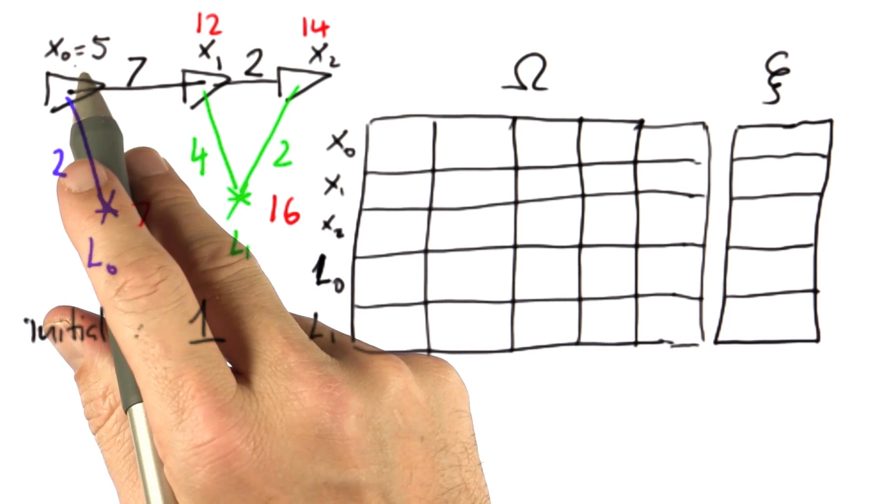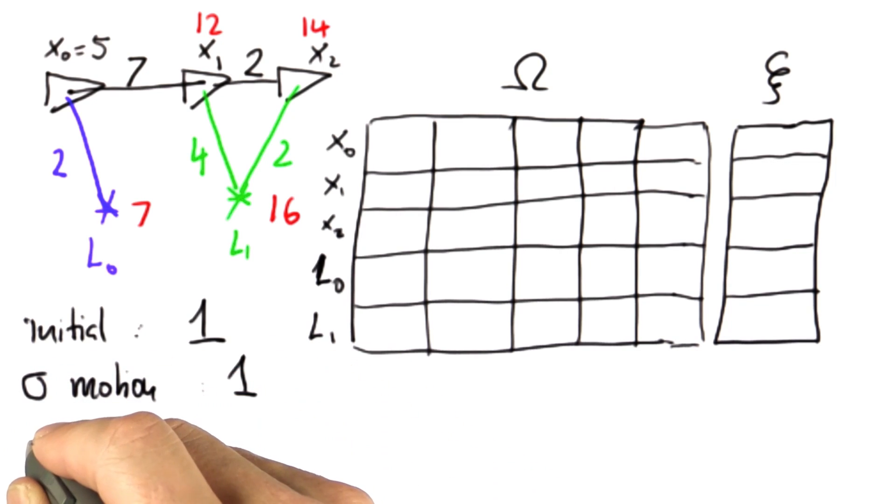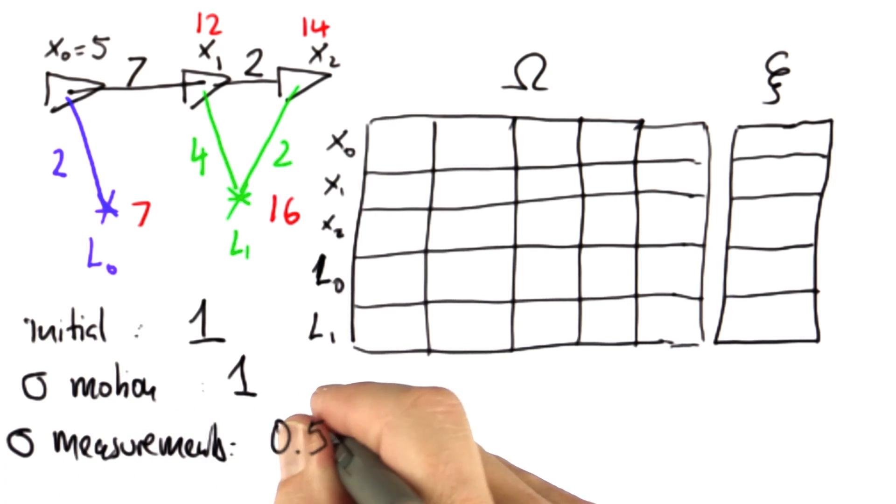I also assume the motion update has a sigma of 1, but the measurement update, the sigma for measurements, has a value of 0.5.